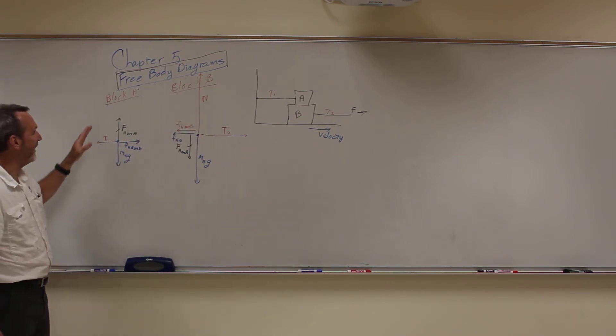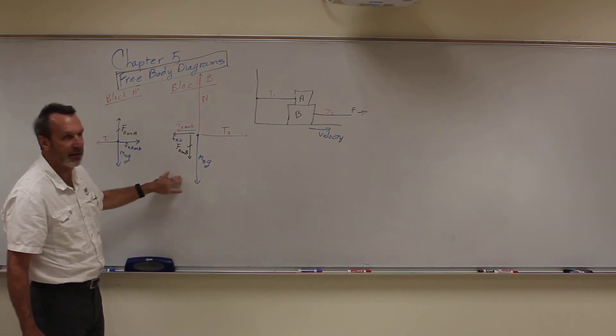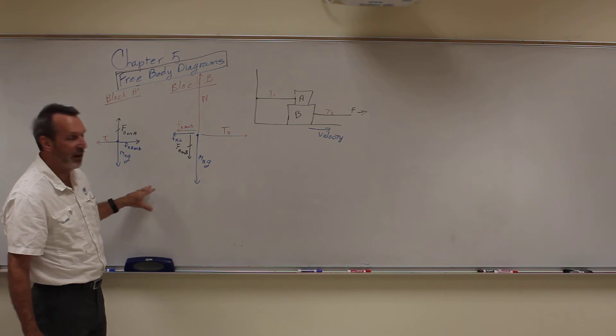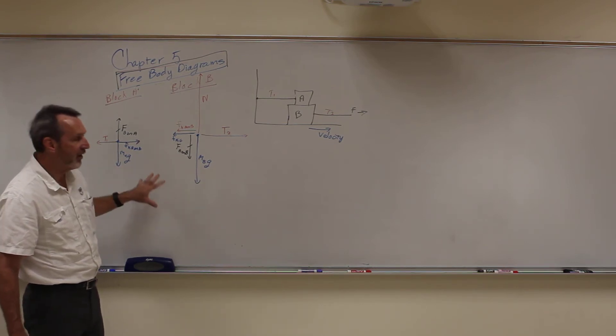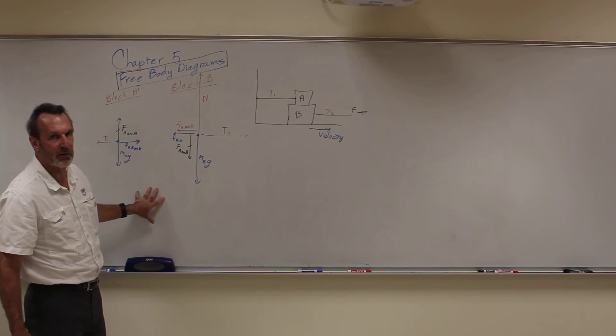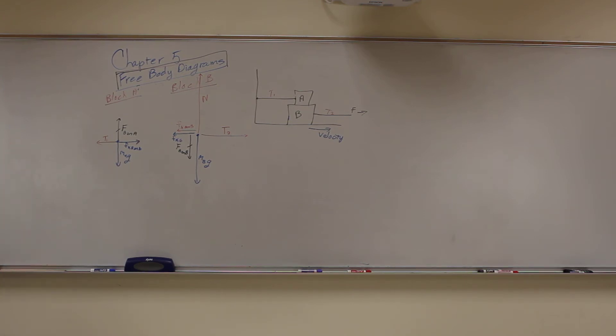Now where it gets complicated is you'd have to do f net x and f net y for block A, and f net x and f net y for block B. So, you start to get like three or four equations simultaneously, and you have to solve them. Some of these problems get very, very long. But that's okay. You just got to do a step at a time, and you'll be okay. Chapter five, we're doing free body diagrams. We're good with that free body diagram.